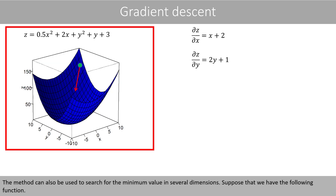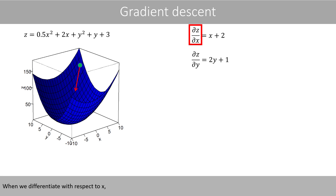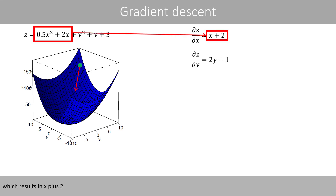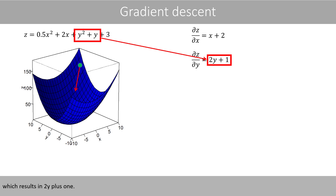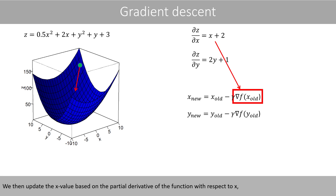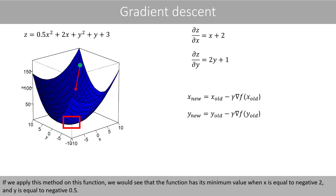The method can also be used to search for the minimum value in several dimensions. Suppose that we have the following function. We can then calculate the partial derivatives like this. When we differentiate with respect to x, we treat y as a constant, which results in x plus 2. And when we differentiate with respect to y, we treat x as a constant, which results in 2y plus 1. We then update the x value based on the partial derivative with respect to x, and update the y value based on the partial derivative with respect to y. If we apply this method on this function, we would see that the function has its minimum value when x is equal to negative 2 and y is equal to negative 0.5.